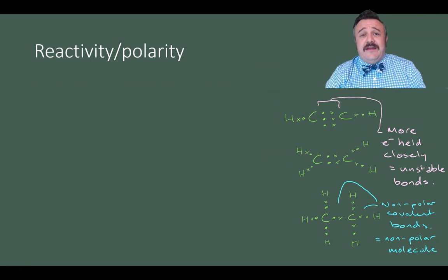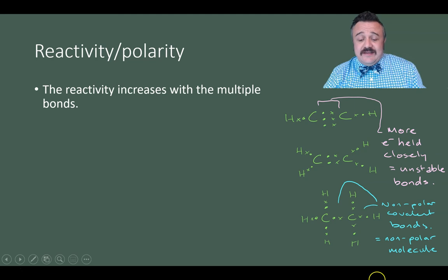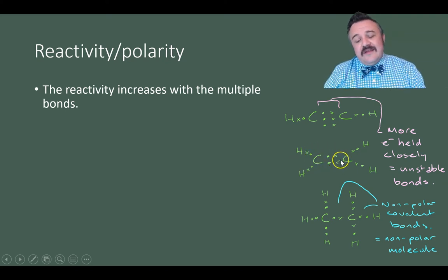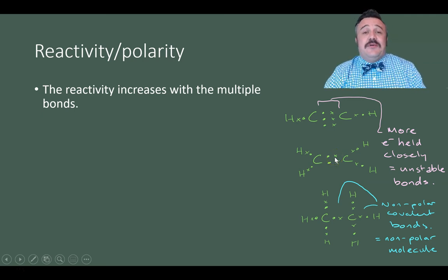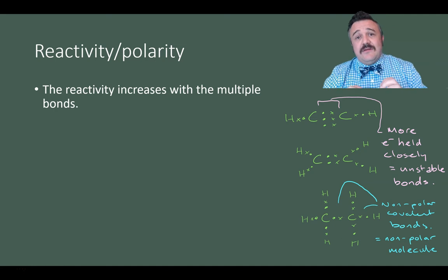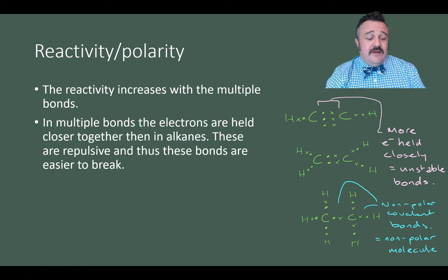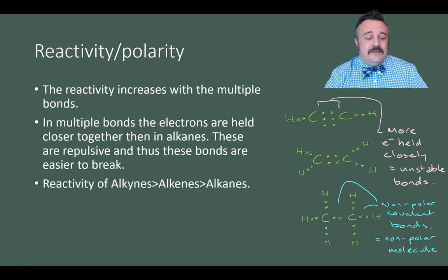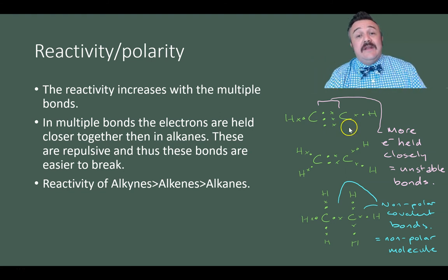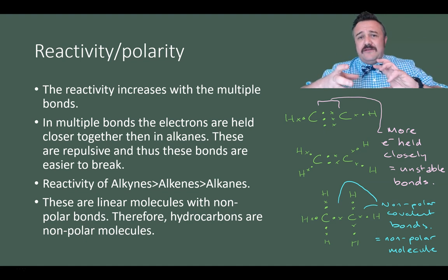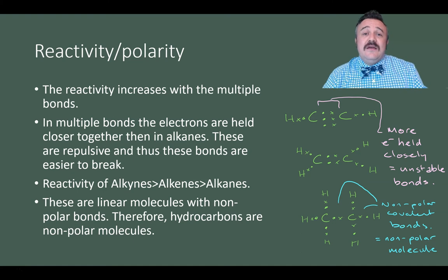So let's look at reactivity and polarity. Reactivity increases with multiple bonds, and we see this down here. Here we have these single bonds. The electrons are able to spread around. It's not such a big deal. Whereas here in our alkyne and our alkene, these are Lewis dot structures, we can see that the electrons are actually held close together, and they're all negative charges, so it's a bit less stable. So the more bonds there are between any two carbons, the more reactive it's going to be, and that's where the reaction will occur first. So multiple bonds, as I said, the electrons are held closely together and their repulsive forces from each other make it want to split apart. So the reactivity goes alkynes to alkenes to alkanes. Now, as we can see here, we're generally talking about linear molecules with an even dispersion of non-polar covalent bonds, and that means our hydrocarbons tend to be non-polar.